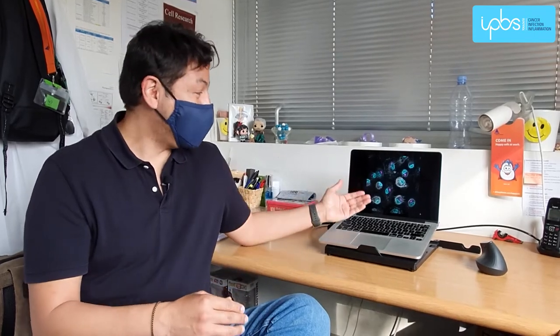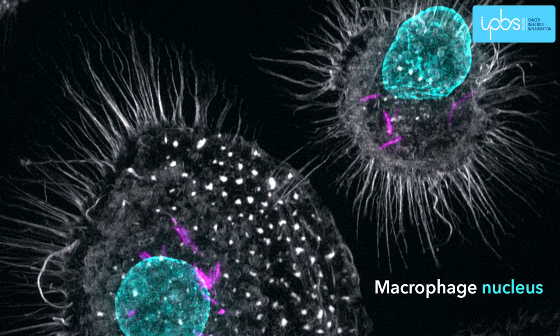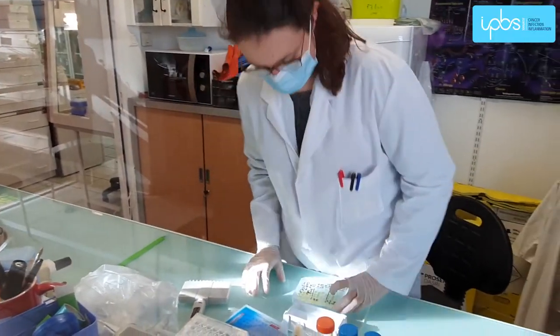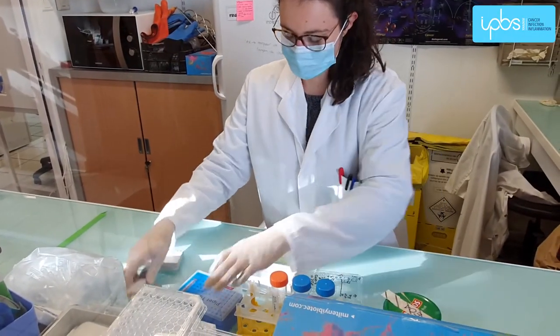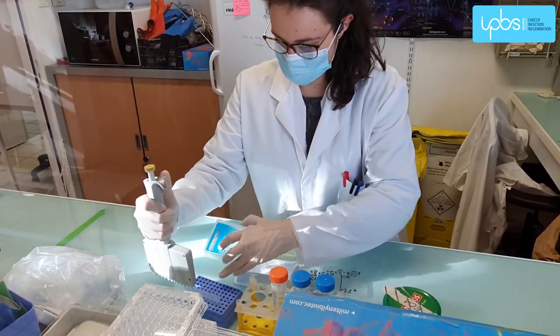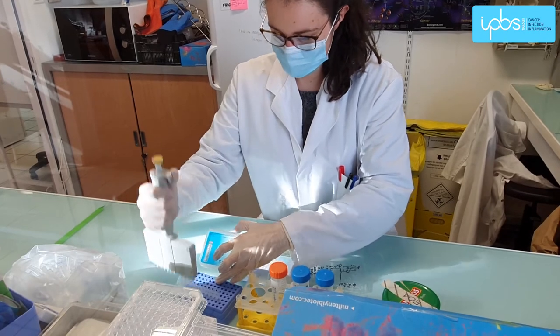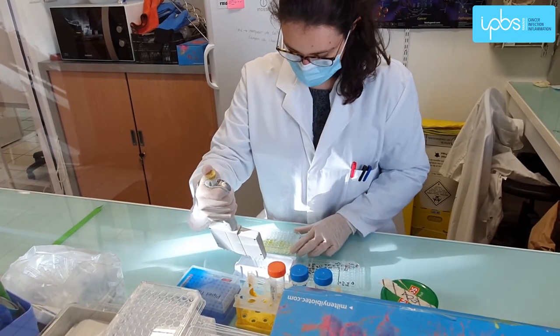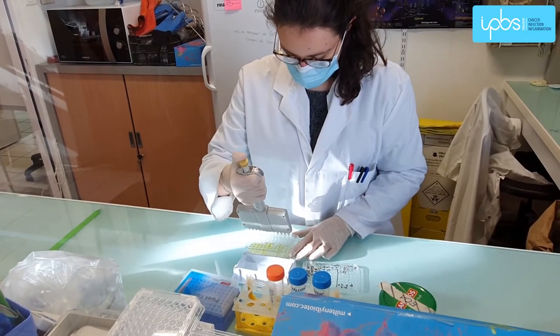We have known for a while that macrophages — the Mr. Pac-Man of the immune system, because they love to eat material — can be reprogrammed by Mycobacterium tuberculosis. Here we wonder if this reprogramming is due to the metabolic state of these macrophages.